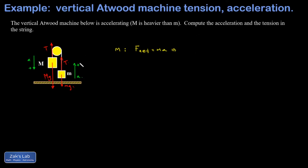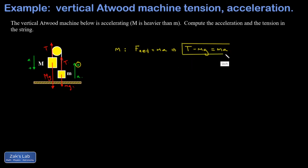Using the upward-is-positive coordinate system, T counts as positive and little mg counts as negative, and that equals little m times its acceleration — there's our first equation. Because the string is not stretchy, a is exactly the same for both objects. Big M is also accelerating with the same magnitude but moving in the opposite direction, which we define as positive for the analysis of big M.